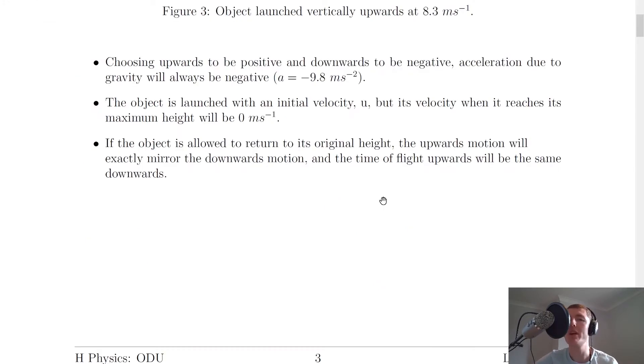There's a few things we need to be aware of when we're doing questions involving objects being launched vertically upwards. The first thing is that choosing upwards to be positive and downwards to be negative, acceleration due to gravity will always be negative where a is minus 9.8 meters per second squared. This is what we saw for an object dropped from rest and it makes sense here.